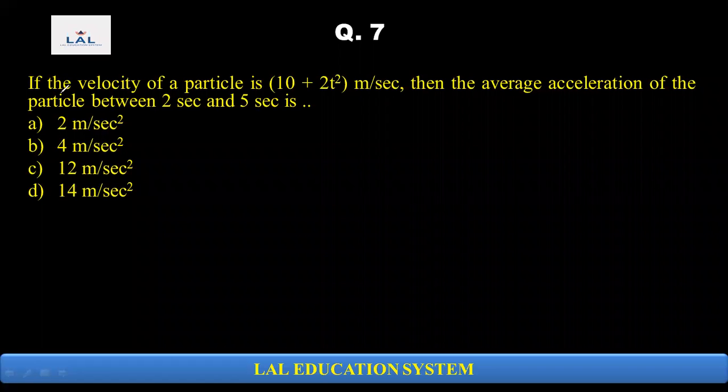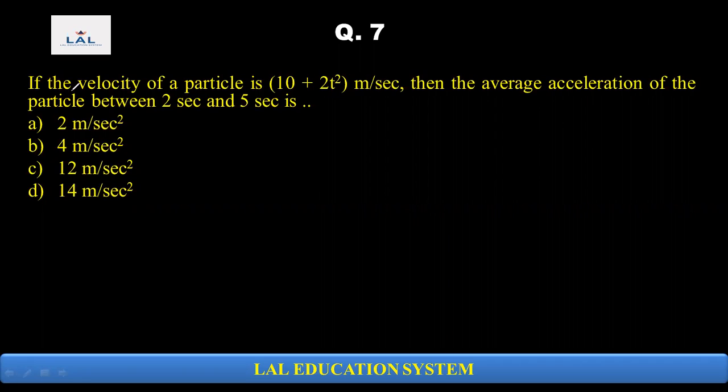Hello, students. In this question, if the velocity of a particle is 10 plus 2t square meter per second, then we need to find the average acceleration of the particle between 2 seconds and 5 seconds.